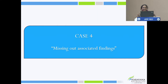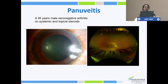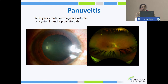Case 4: Whenever we are treating uveitis and the patient is not responding to treatment, we have to watch out for other findings or complications. Here, a 36-year-old male, known case of seronegative arthritis on topical and systemic steroids, did not improve. There was worsening of vision, which is why the patient was referred to us.